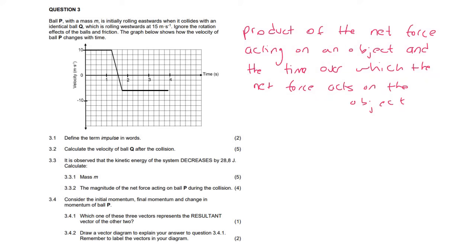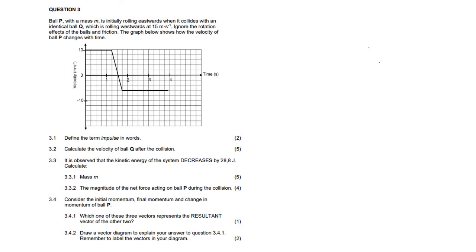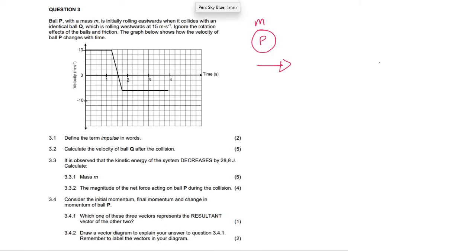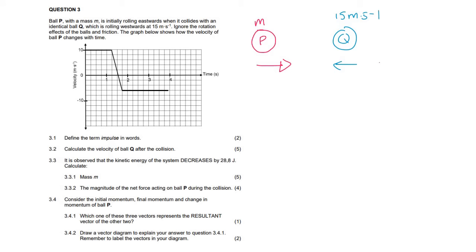Question 3.2: calculate the velocity of bore Q after the collision. We have bore P with mass m initially rolling eastwards. I'm going to draw a picture. So this is bore P with mass m going east, then it collides with an identical bore — so they have the same mass — which is rolling west. This is bore Q rolling west at 15 meters per second, and it also has a mass of m because it's identical.